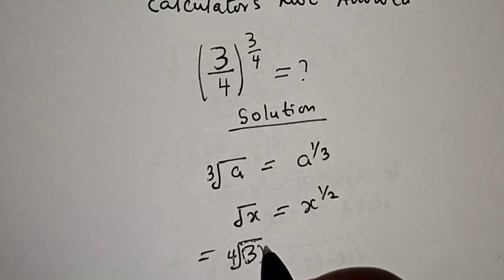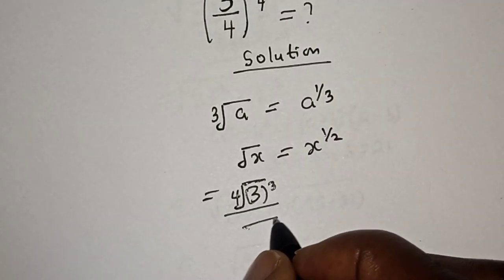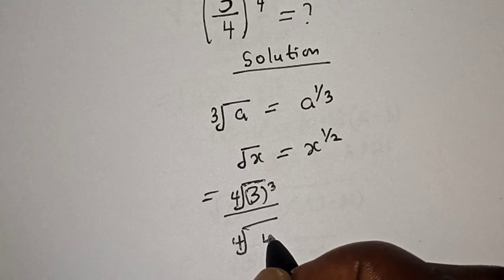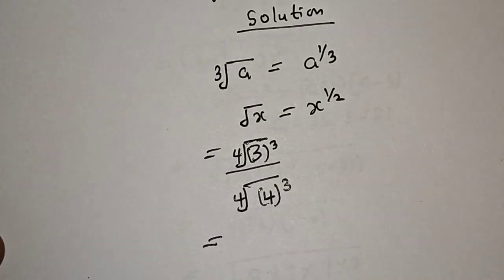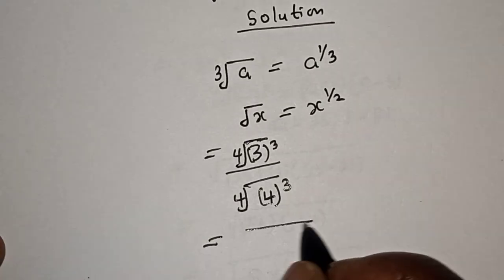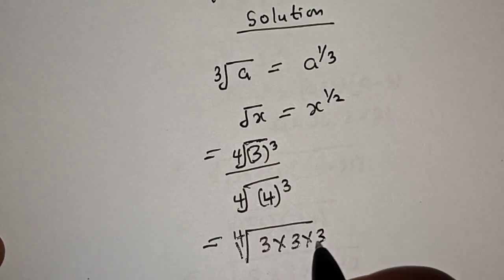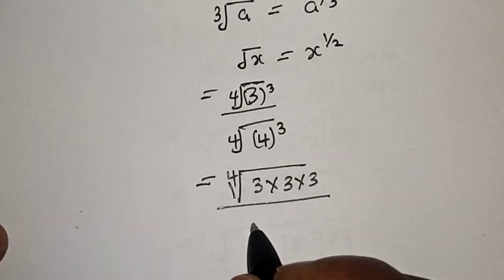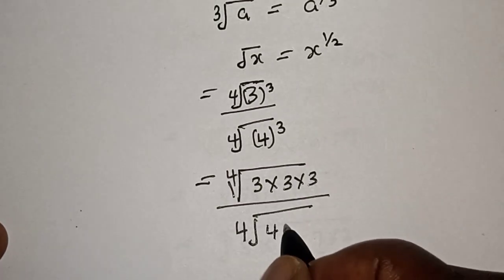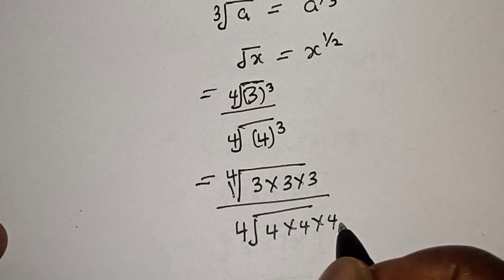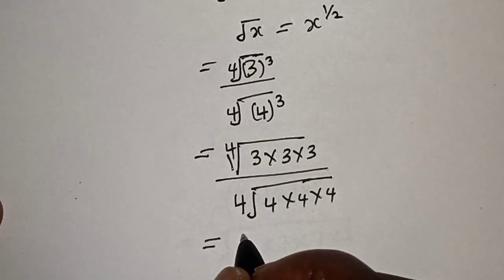...3 raised to power 3, over the 4th root of 4 raised to power 3. Then this is equal to the 4th root of 3 times 3 times 3, over the 4th root of 4 times 4 times 4.